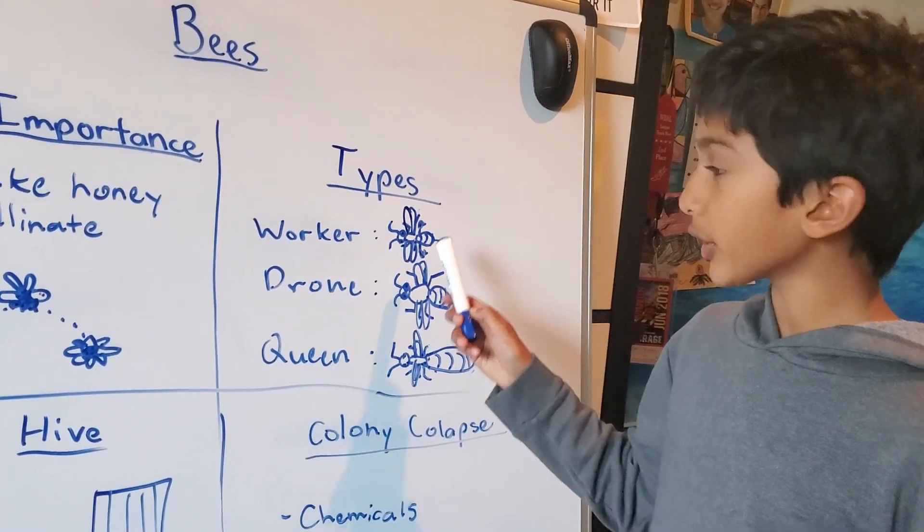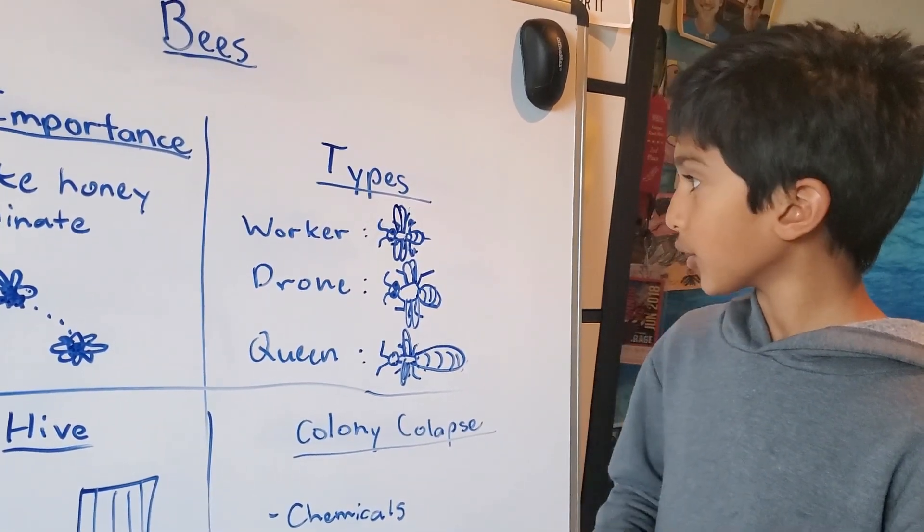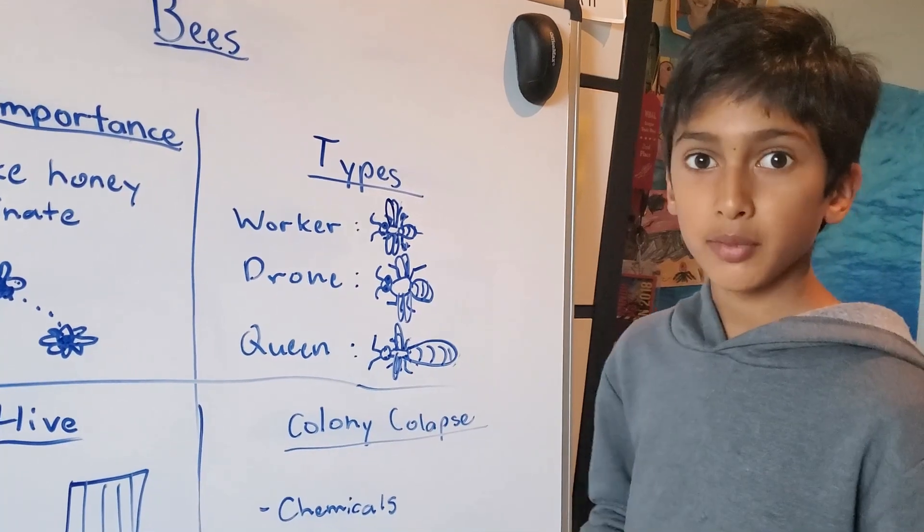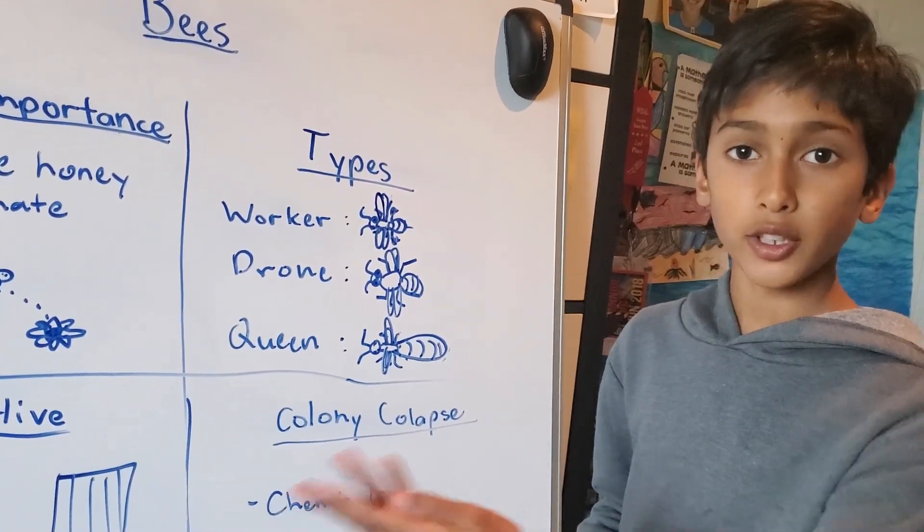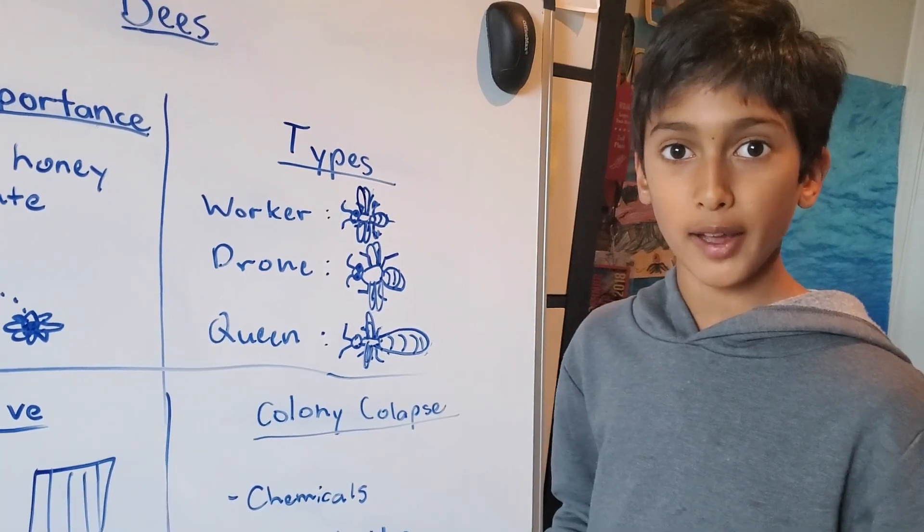Now the worker. The worker is the smallest bee in the hive. The worker has several jobs like collecting pollen for the honey they store for winter and even defending the hive.